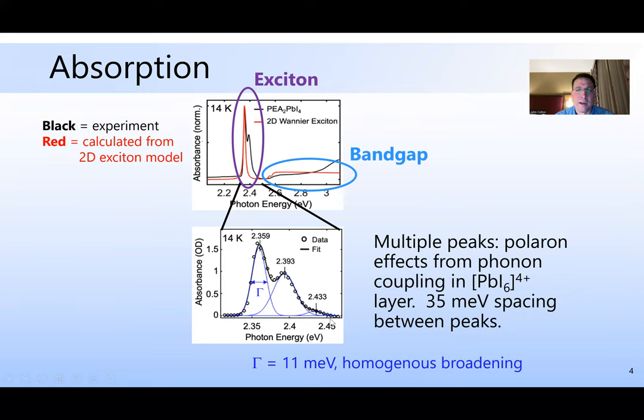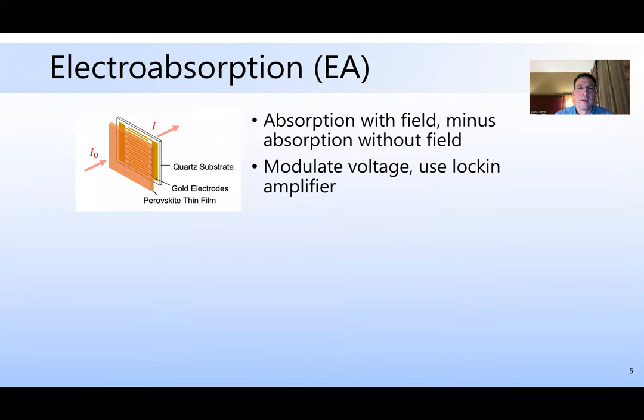Zooming in now on the exciton feature, it's actually comprised of three peaks, which are well known and understood to be from photon coupling in the lead iodide layer. The width is approximately 11 millielectron volts, which we attribute to homogeneous broadening, and I'll refer to that again in a minute.